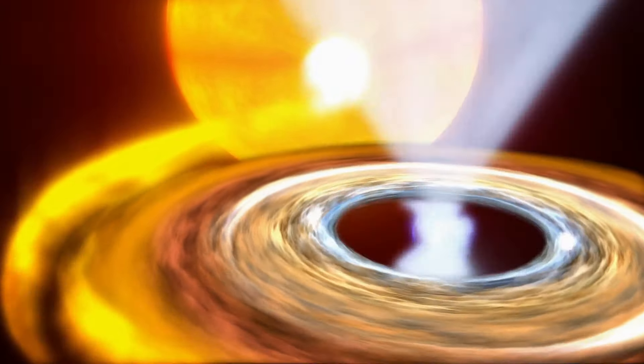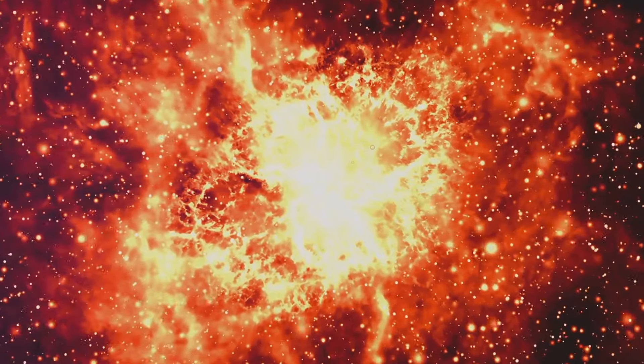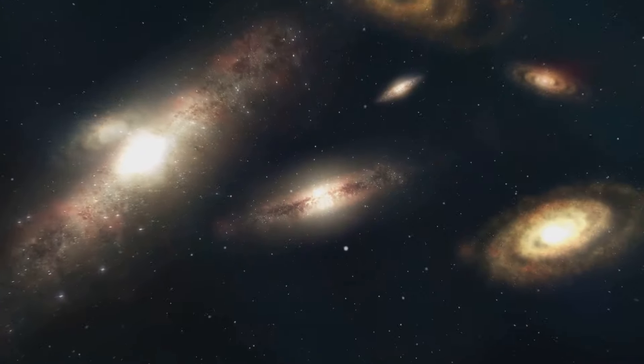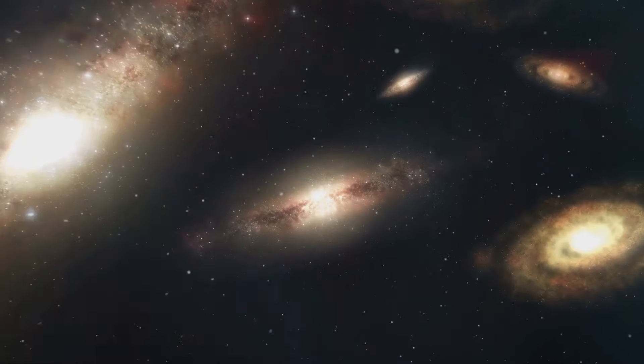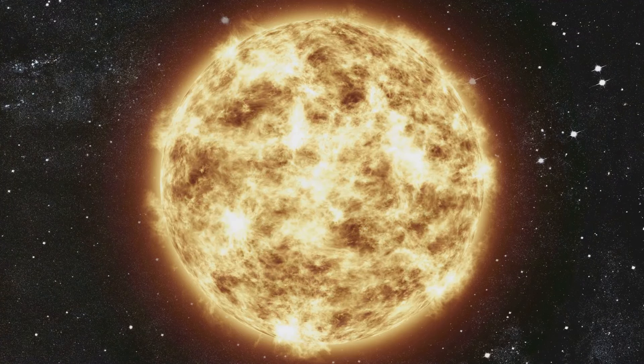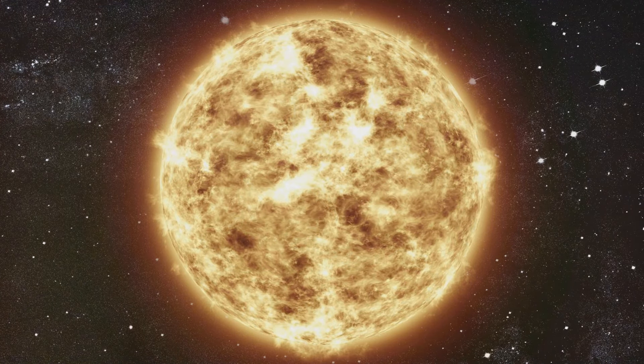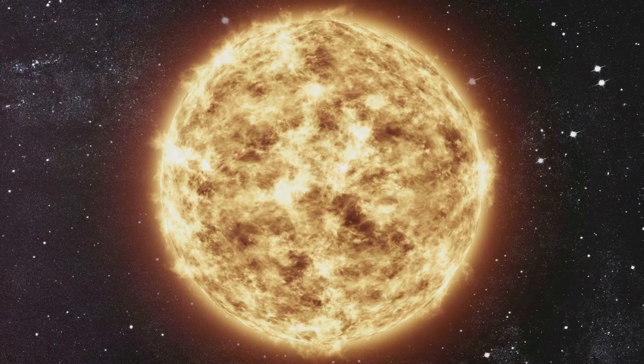Imagine a place where a teaspoon of matter weighs billions of tons. Welcome to the domain of neutron stars, the collapsed cores of massive stars that have gone supernova. These stellar remnants are so dense that their protons and electrons are squeezed together, forming a sea of neutrons. A sugar cube-sized piece of a neutron star would weigh as much as Mount Everest, showcasing the mind-boggling compression of matter in these cosmic powerhouses.